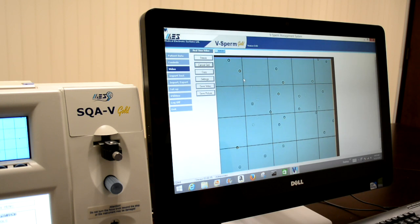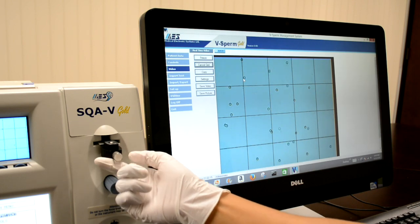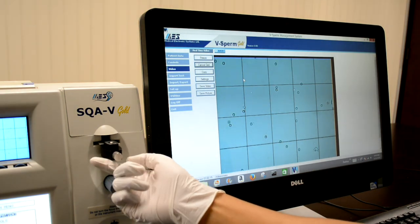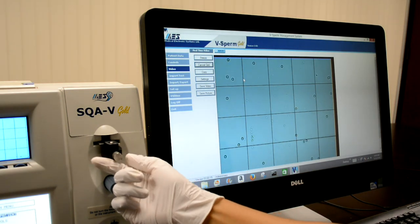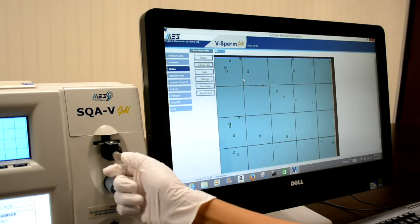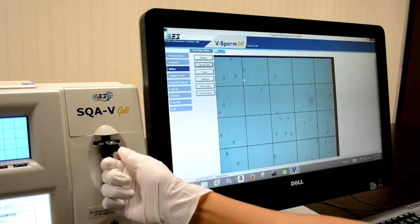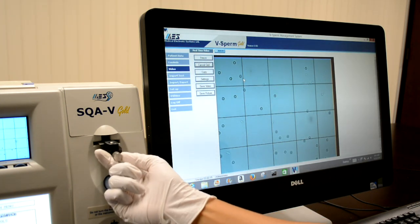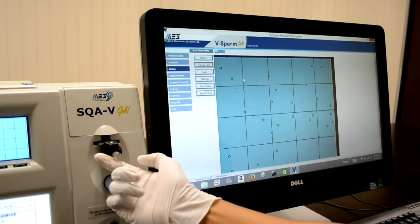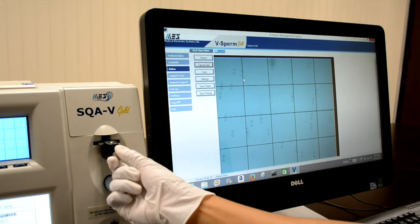The slide adapter allows you to change fields of view by turning the silver knob. When counting, you should select random fields of view and count at least 200 sperm and divide by the number of fields viewed in order to get an average. WHO 5th edition manual instructions should be followed for any manual count.